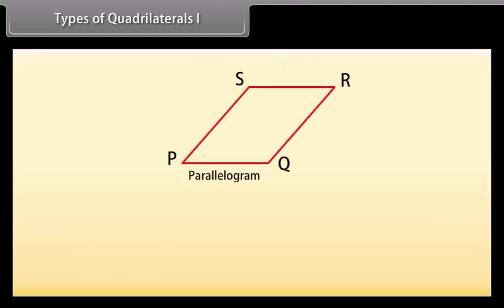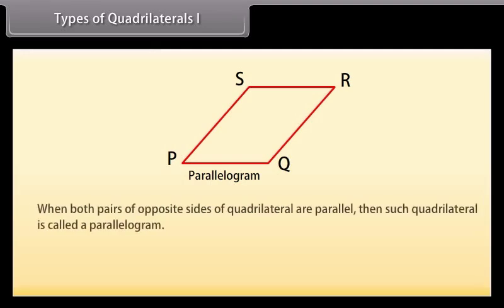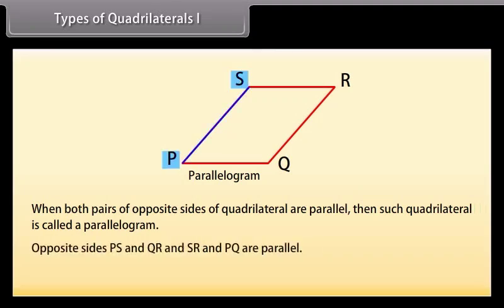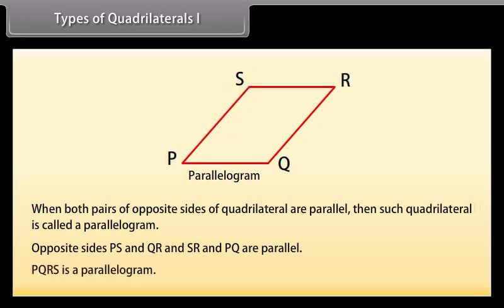Next is parallelogram. When both pairs of opposite sides of a quadrilateral are parallel, then such a quadrilateral is called a parallelogram. Here, opposite sides PS and QR, and SR and PQ are parallel. So PQRS is a parallelogram.